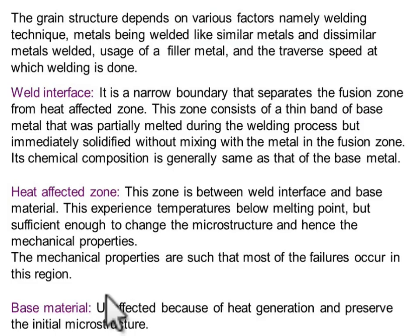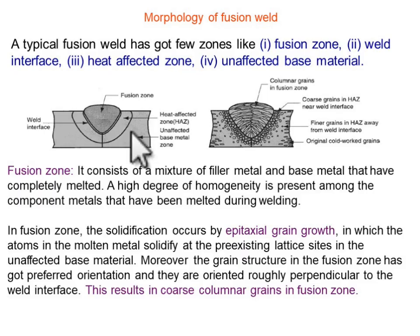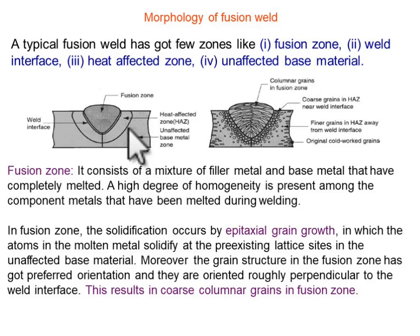The base material is unaffected by the heat and preserves its initial microstructure. When welding starts, the material that is far away from the welding region never experiences any high temperature. The grains are found in the same arrangement as before, so this is called the unaffected region — the base material is unaffected by the elevated temperature.